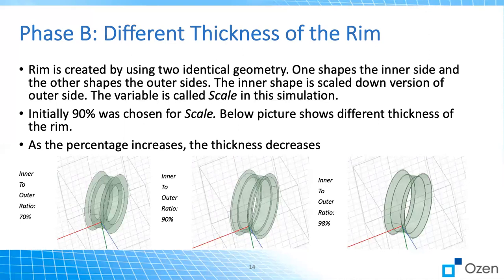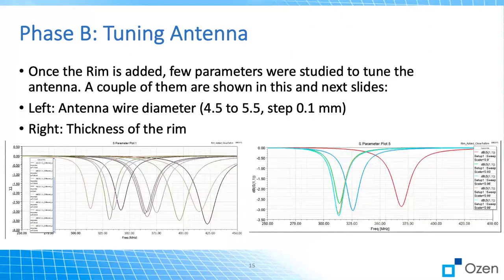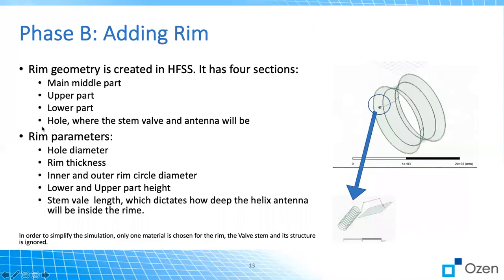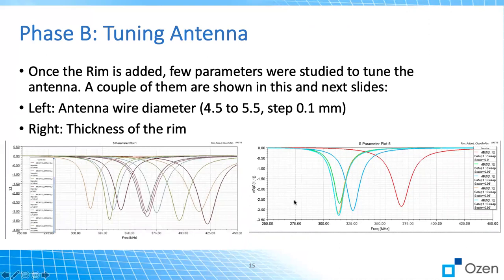The less thick the rim is, the better the radiation. But at the same time, it cannot be very, very thin because it's not feasible — it has to have a minimum thickness in order to handle the weight of the car and all the mechanical pressure. Again, there are different parameters we need to study, and to keep it simple, we showed just two of them here.